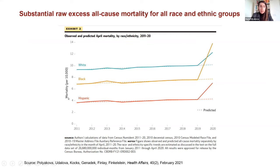These differences in both levels and excess all-cause mortality become larger when we account for age, sex, and geographic distribution, primarily driven by age differences. Black and Hispanic populations tend to be much younger than whites, so comparing raw mortality numbers leads to the inaccurate conclusion that whites experience higher mortality — a conclusion that doesn't hold when comparing within the same age bandwidth.